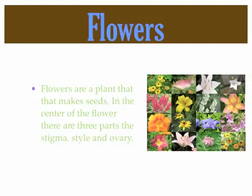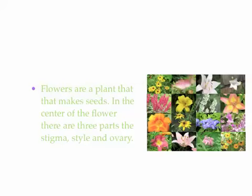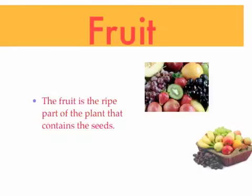In the center of the flower there are three parts: the stigma, style, and ovary. The fruit is the ripe part of the plant that contains the seeds.